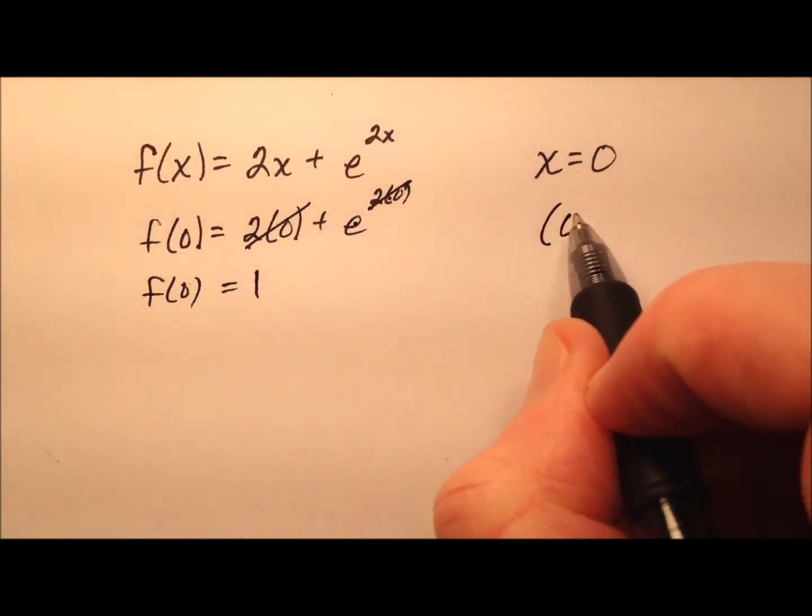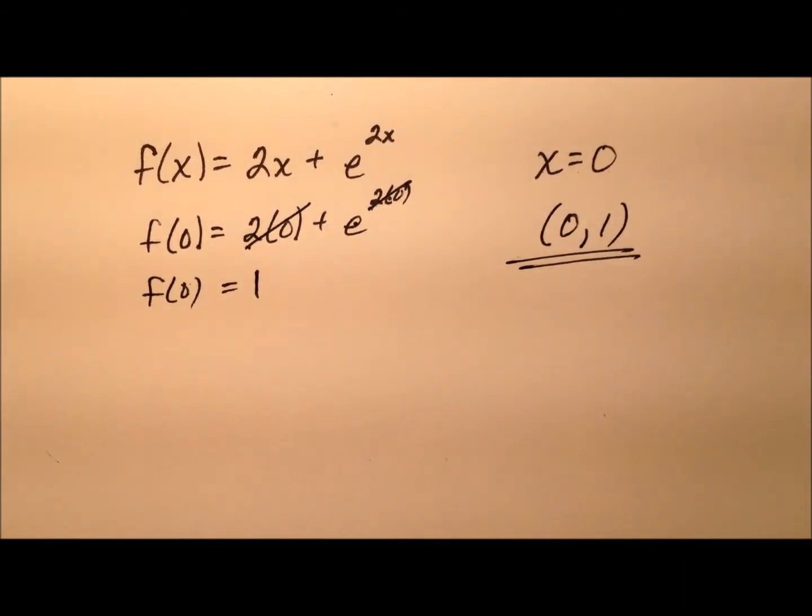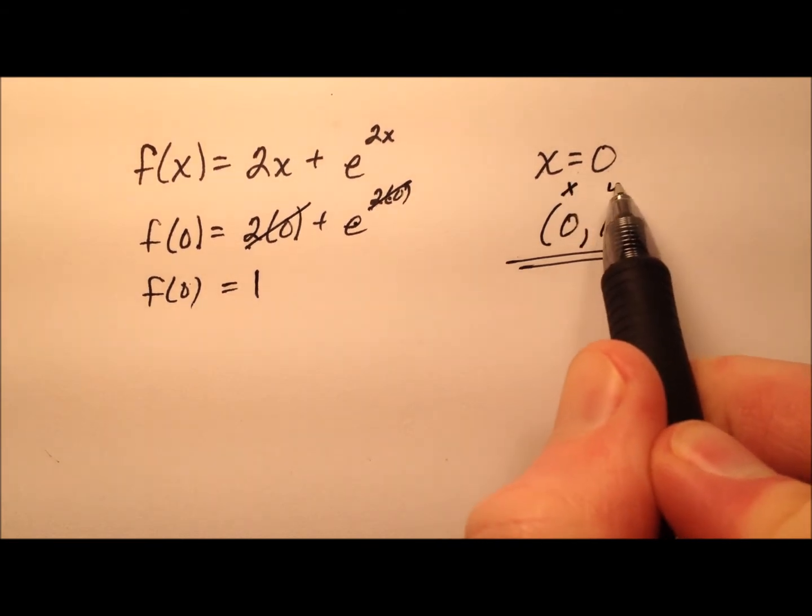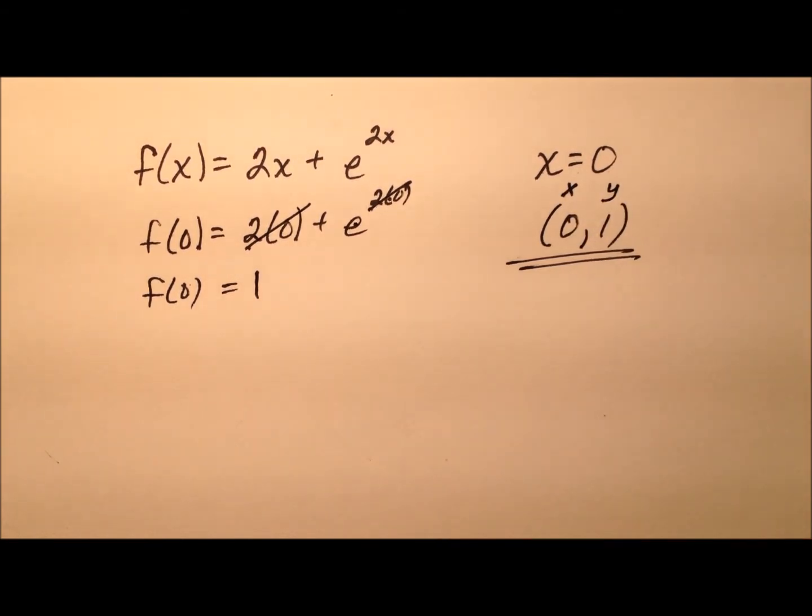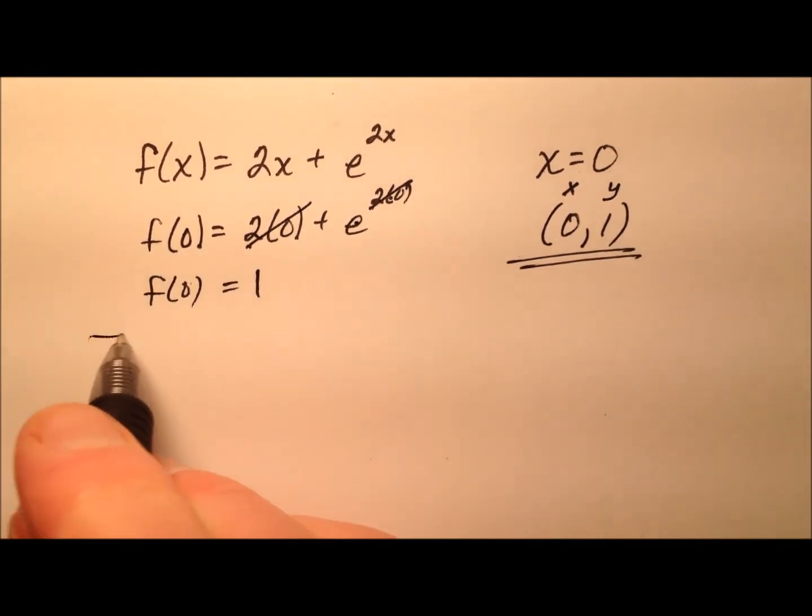This ordered pair will be (0, 1). As soon as we write it in point slope form, we'll be ready to put those values in. But before I go there, I need to find the slope.